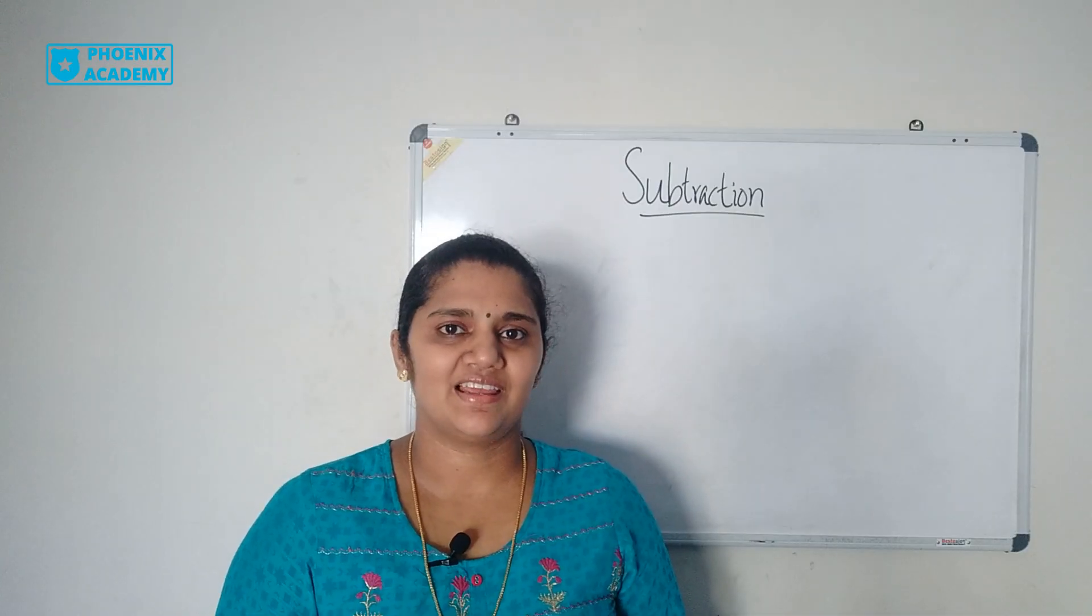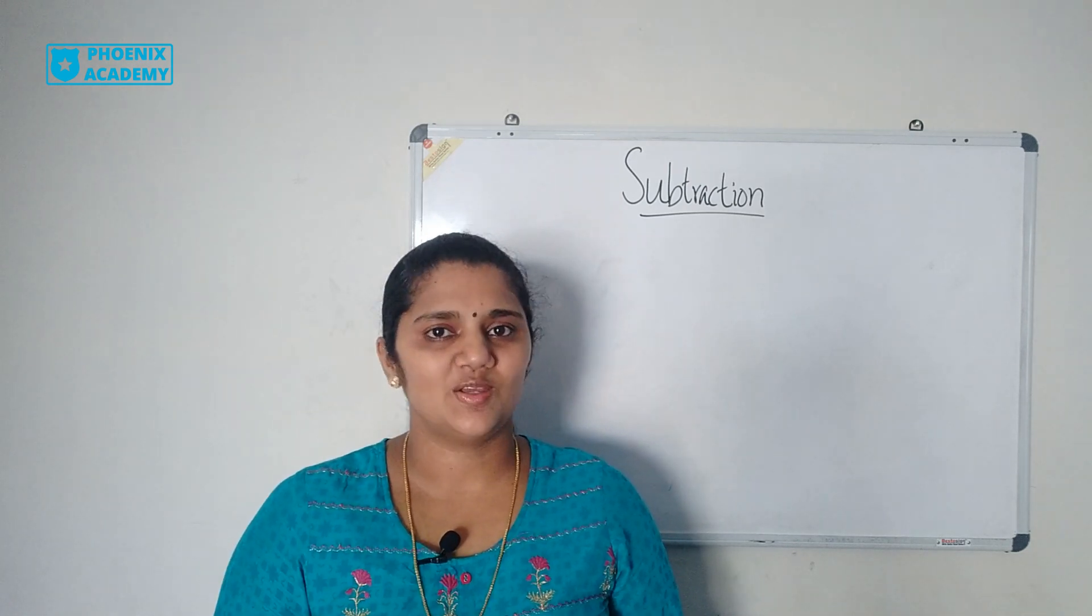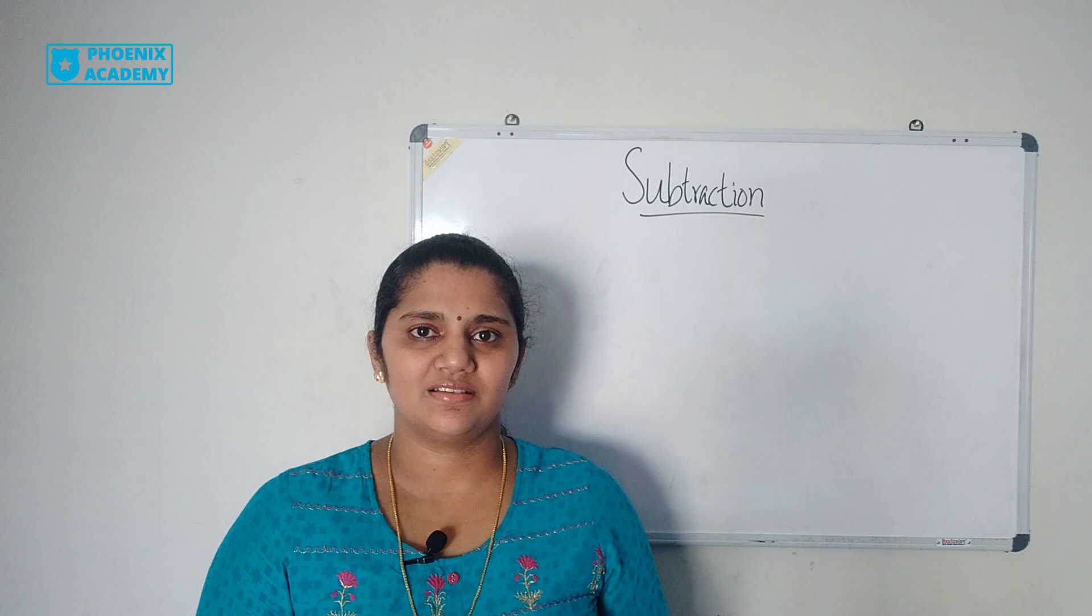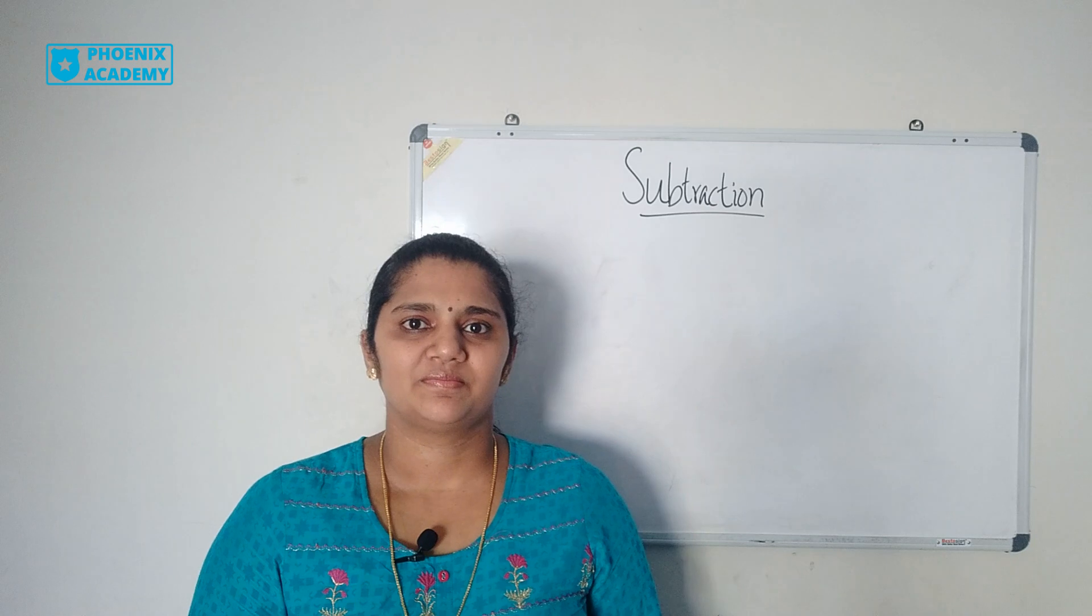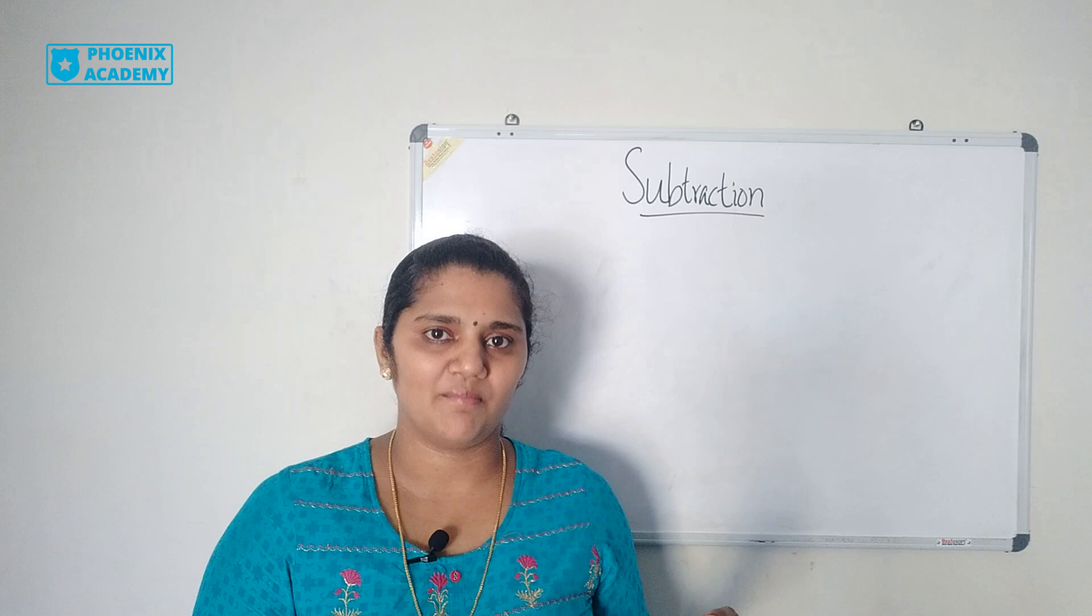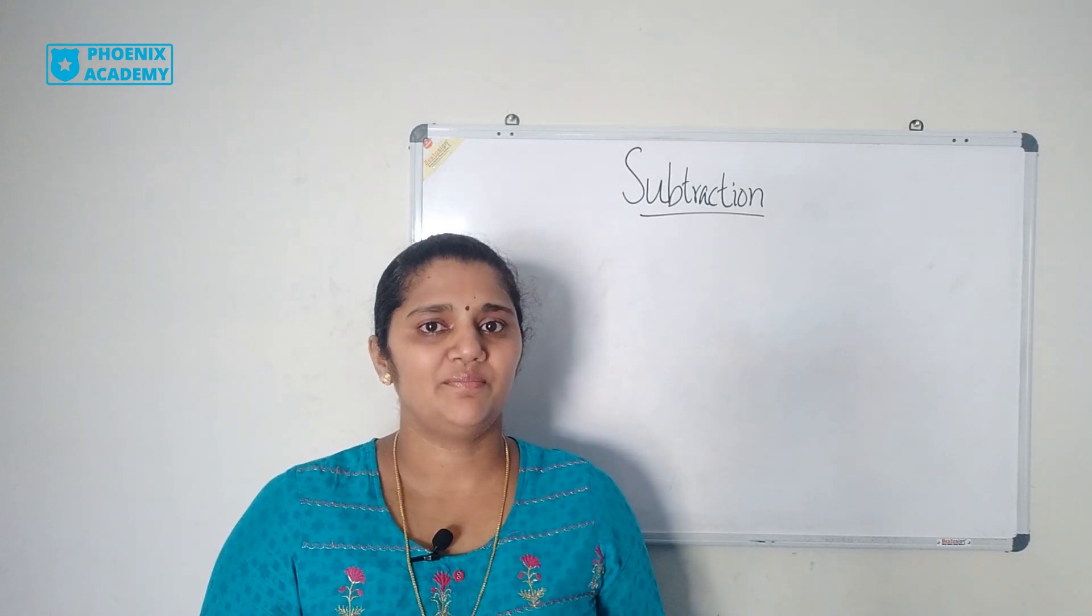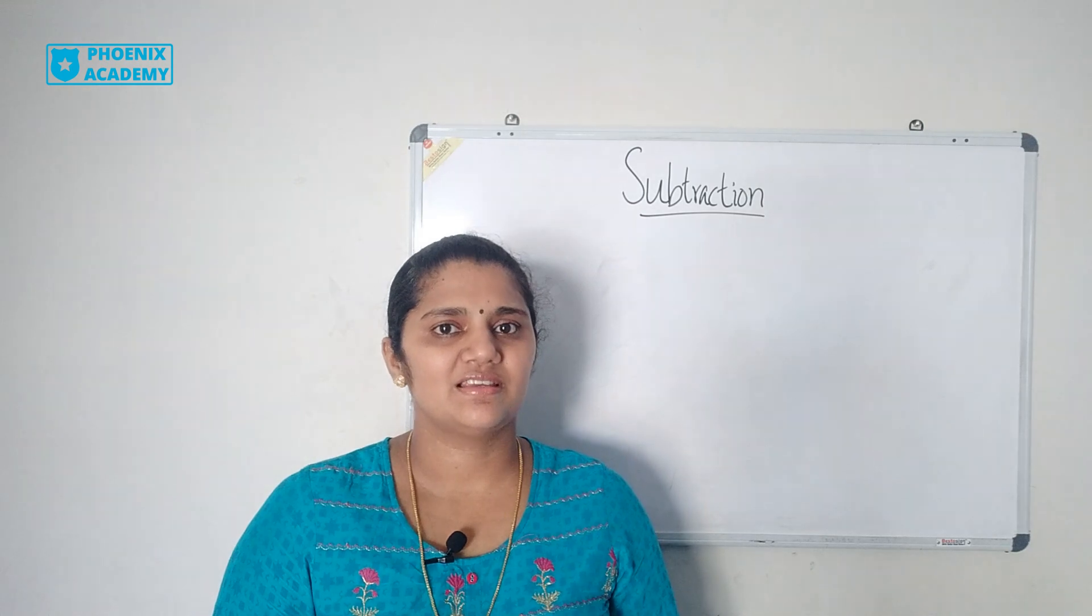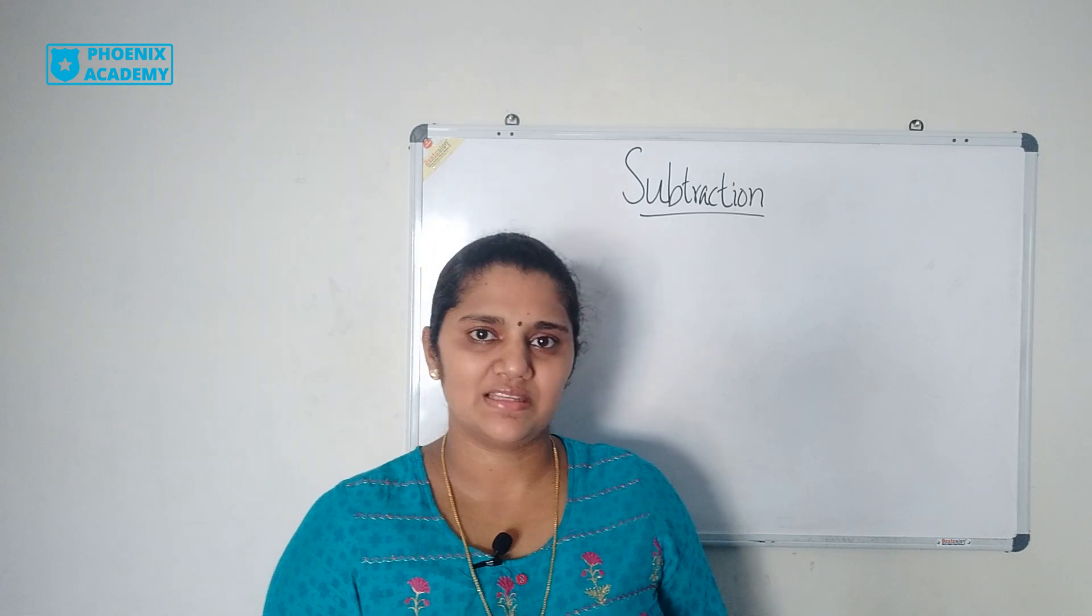Now let's learn some properties of subtraction. When you subtract 0 from any number the result is the same number. Subtracting 0 from any number does not change the number. Second property is when you subtract a number from the number itself the result is 0. Third property is when you subtract 1 from any number the result is its before number. Let's see these properties through some examples.